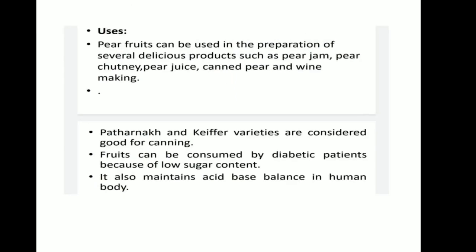Now Uses. Pear fruits can be used in the preparation of several delicious products such as pear jam, pear chutney, pear juice, canned pear, and wine making. Patharnak and Kefir varieties are considered good for canning. Fruits can be consumed by diabetic patients because of their low sugar content. Pear also maintains acid-base balance in the human body.